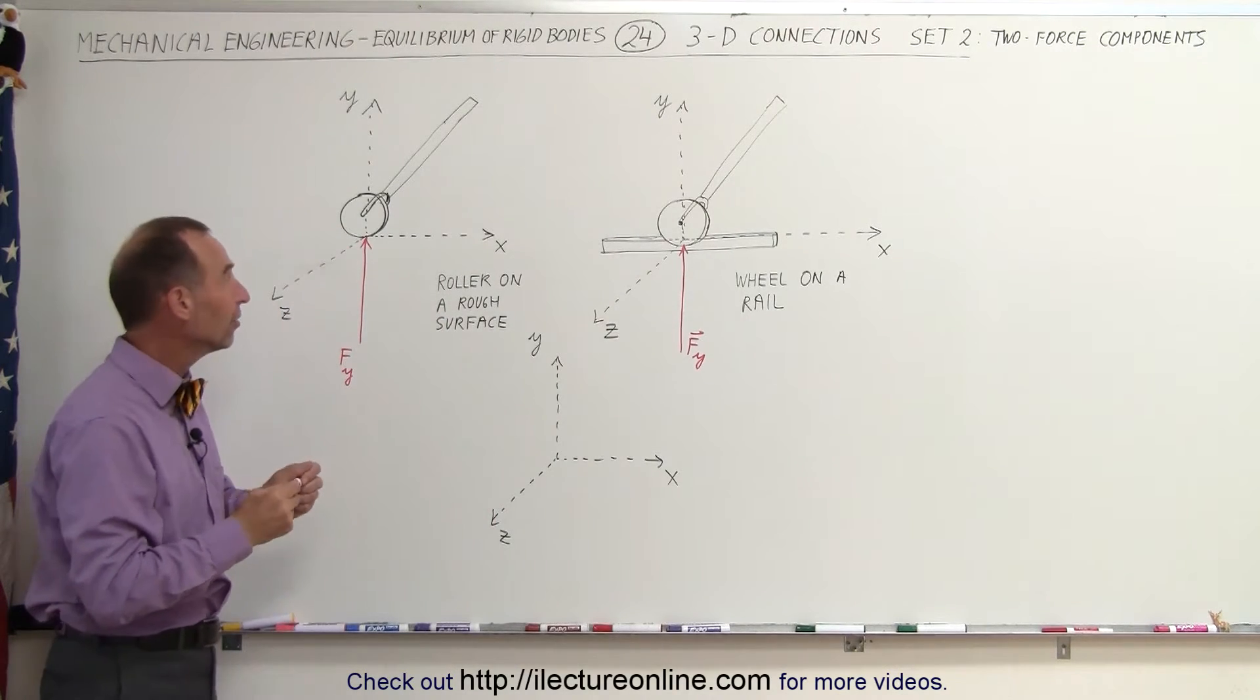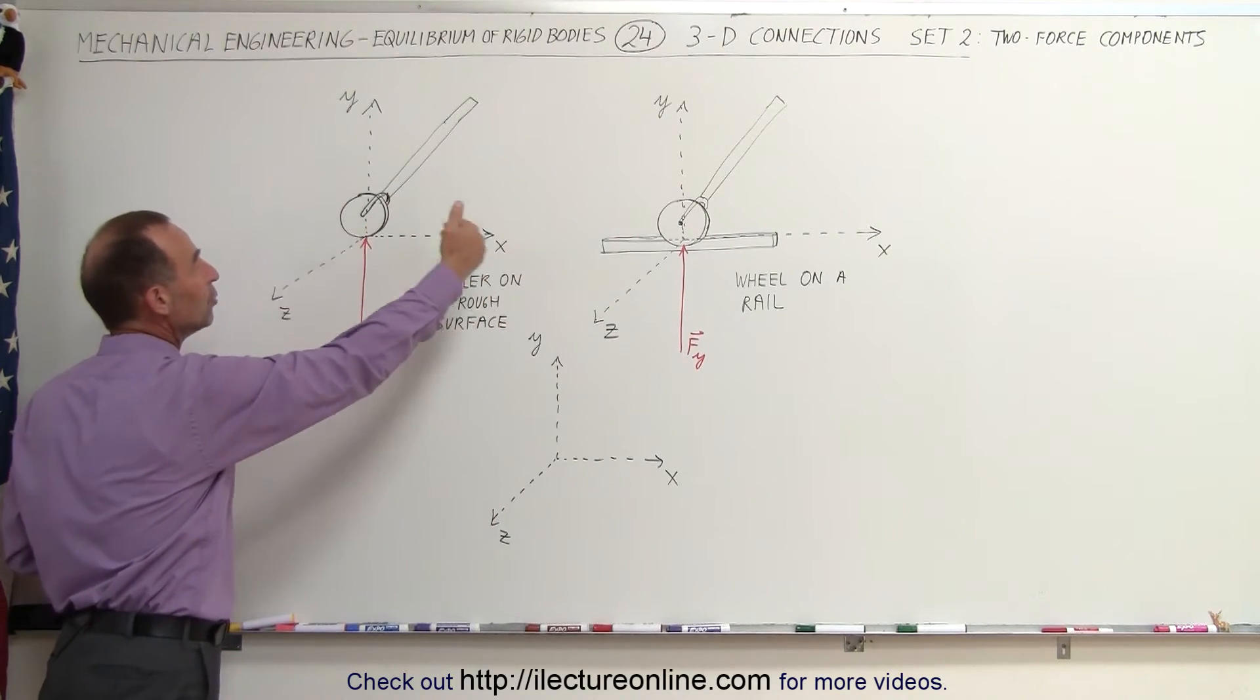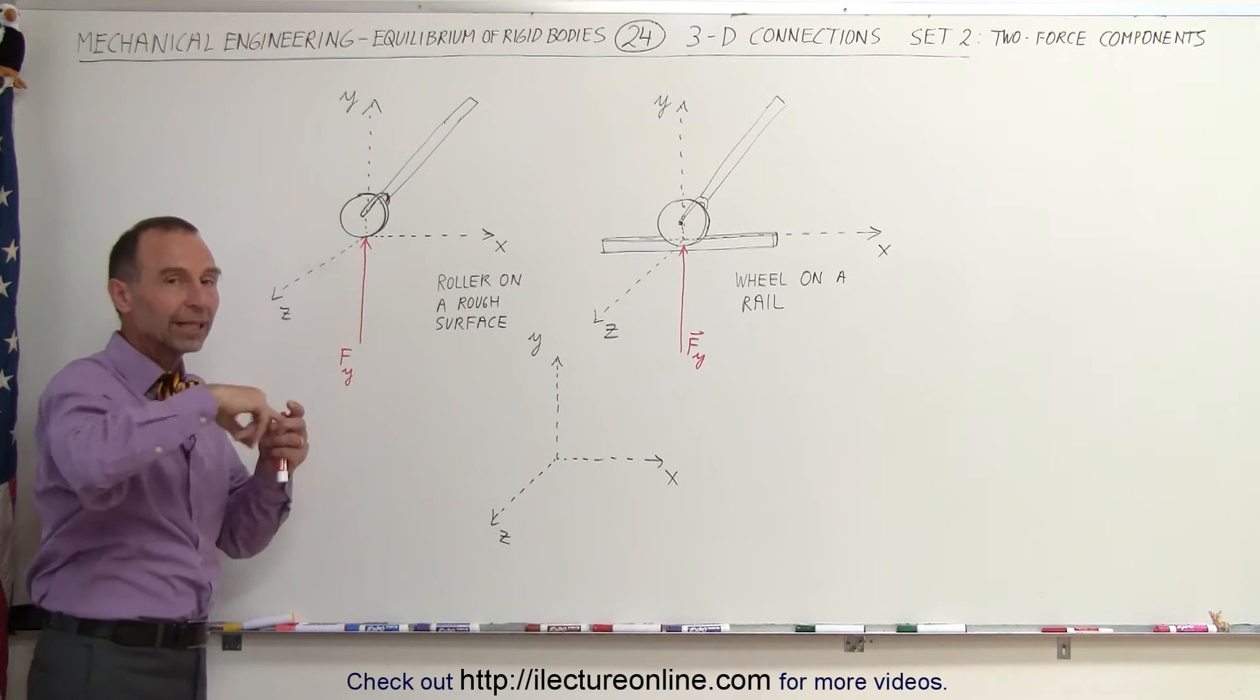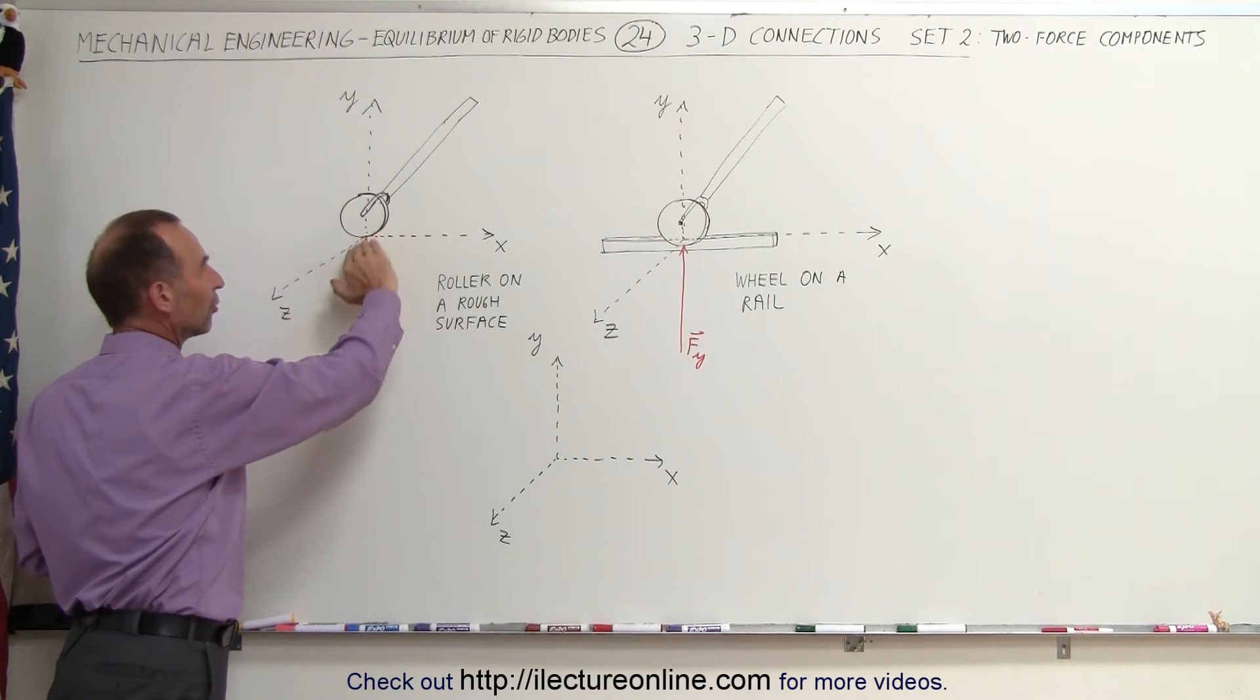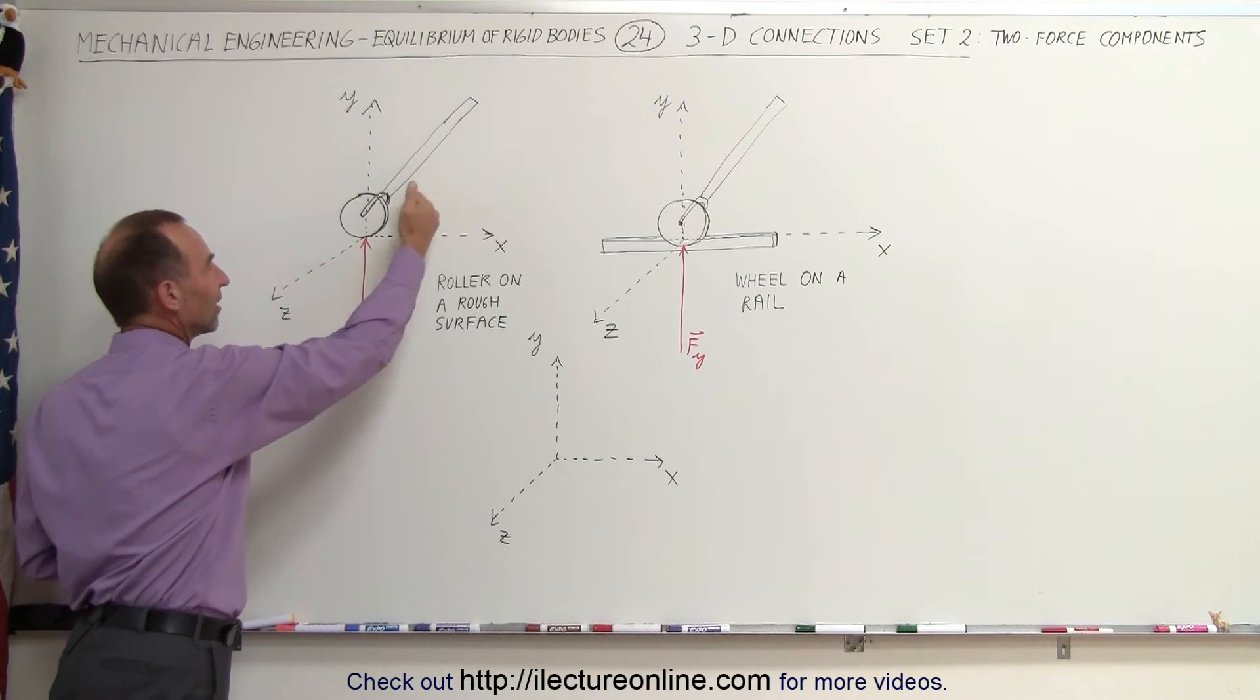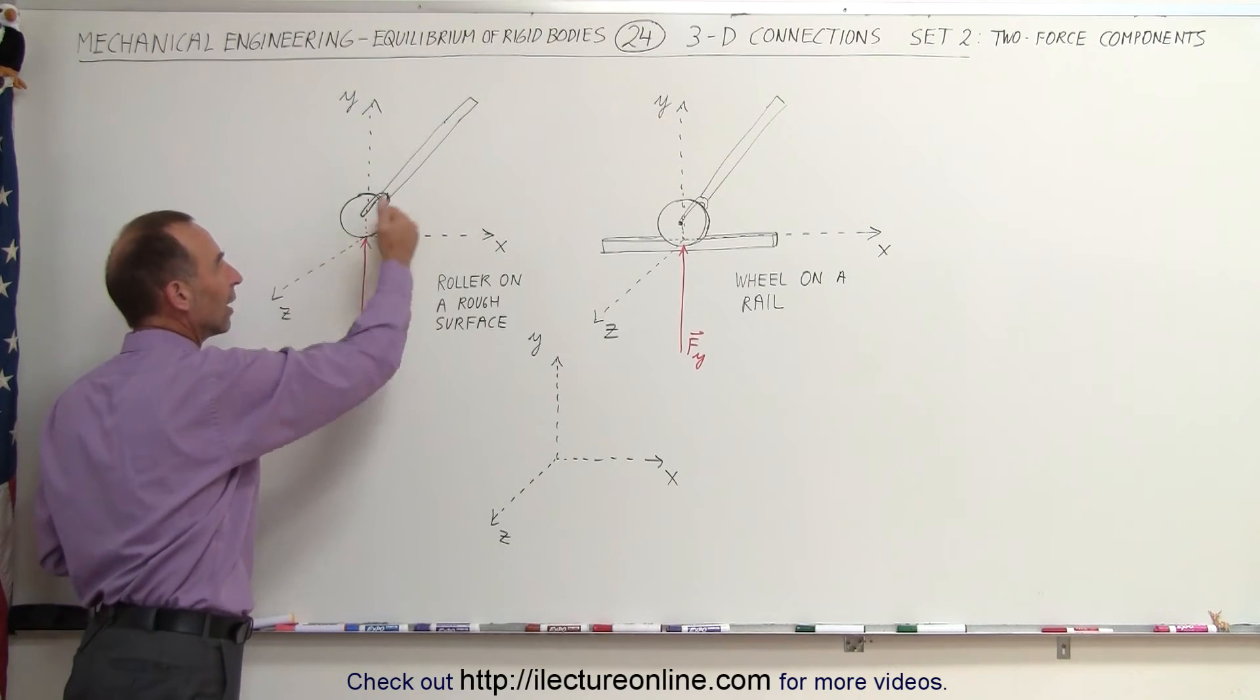But we have a second force, because even though there's relatively no friction going this direction, assuming that the wheel can freely roll, the friction force on the floor will prevent the wheel from sliding in the positive or negative Z direction.